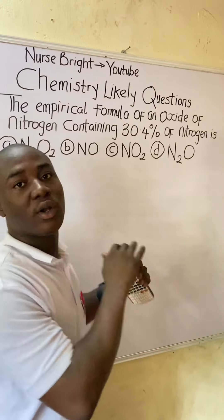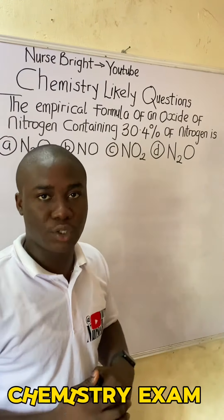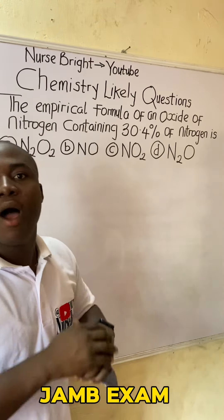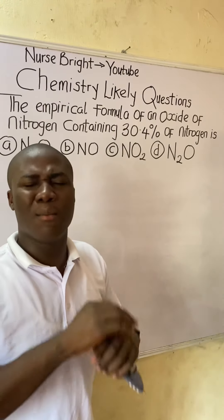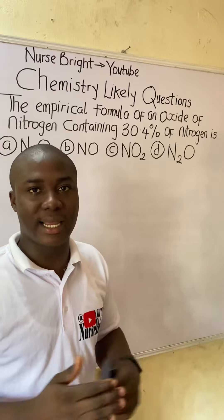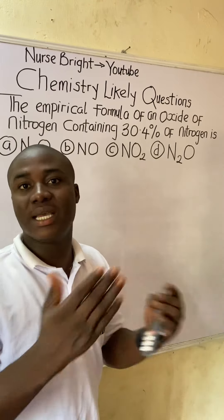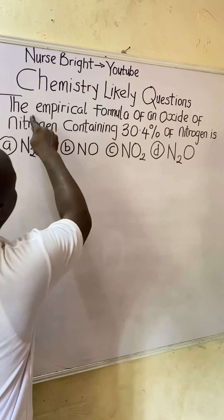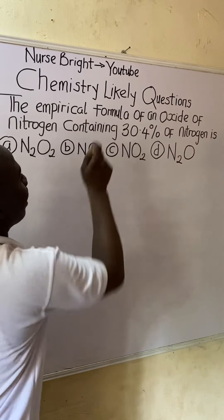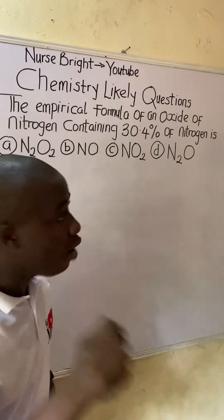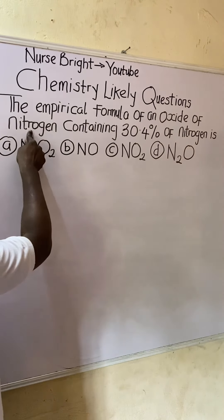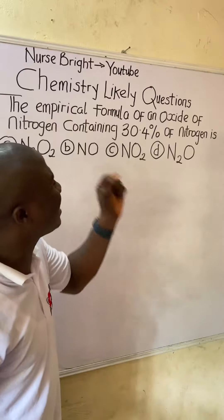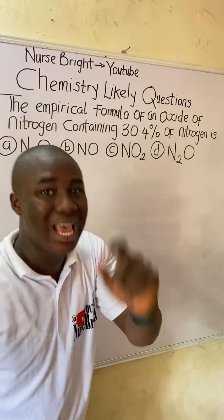If you came across this question in your chemistry exam — whether you are preparing for the JAMB exam, post-UTME exam, or any other chemistry-related exam — here is how to solve it. It is very easy. The question says: the empirical formula of an oxide of nitrogen containing 30.4 percent of nitrogen is what?